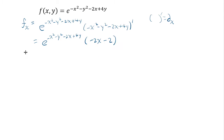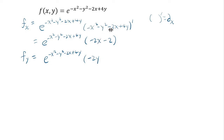In the similar way, if you differentiate by y, the exponential part stays the same, but we differentiate the exponent by y instead of x. We get negative 2y from negative y squared, and 4 from 4y, while the x terms differentiate to zero. So the partial with respect to y is e to the (negative x squared minus y squared minus 2x plus 4y) times (negative 2y plus 4).